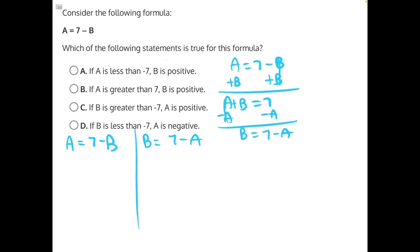Answer choice A says if A is less than 7, B is positive. So let's plug in negative 7 and see what we get, just to get an idea. This value will give us a B value of minus a negative, which is the same thing as adding a positive. It'll give us a positive 14.